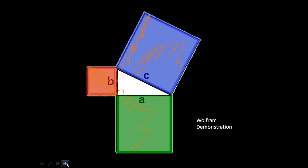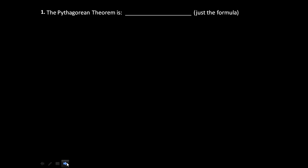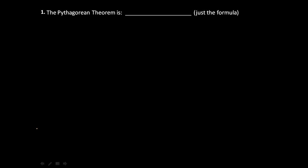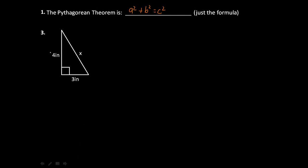Back to our slideshow — let's do some problems. First, what is the Pythagorean theorem? Go ahead and pause the video and write down the formula. Hopefully you've got it: the Pythagorean theorem is a squared plus b squared equals c squared — the sum of the squares of the two legs equals the square of the hypotenuse. Now let's do a couple of actual problems.